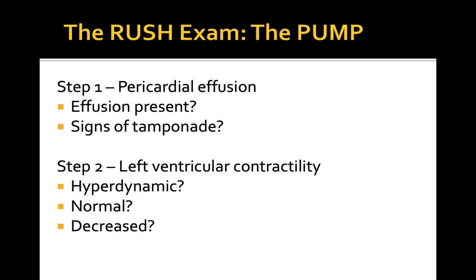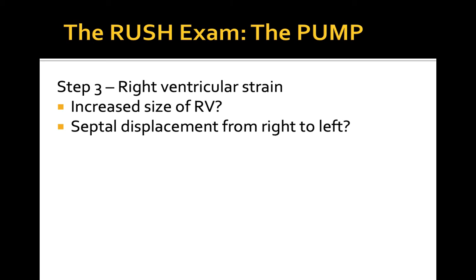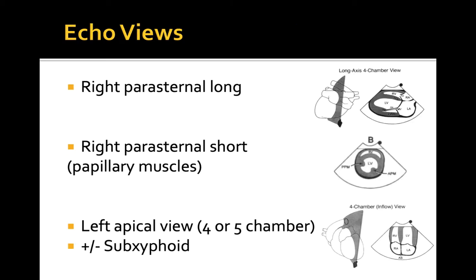The third step in the assessment of the heart focuses on the evaluation of right heart strain. Any condition that causes a sudden pressure increase within the pulmonary vascular circuit will result in acute dilation of the right side of the heart. Right ventricular enlargement, septal displacement towards the LV lumen, and some other findings we will discuss during this module may indicate the presence of RV strain.